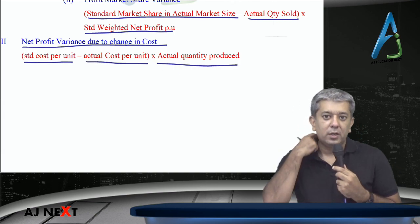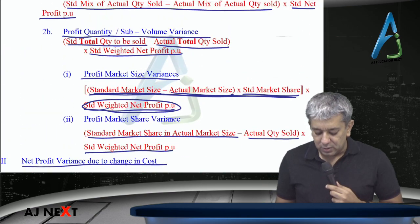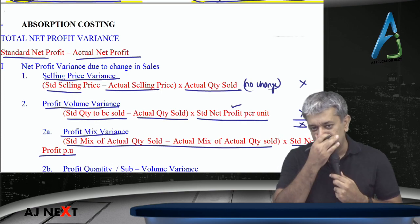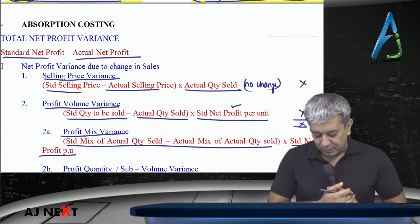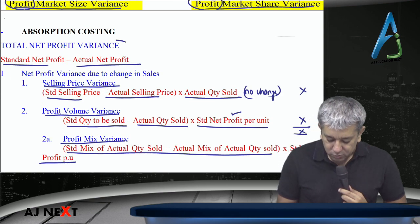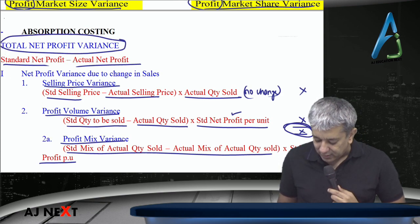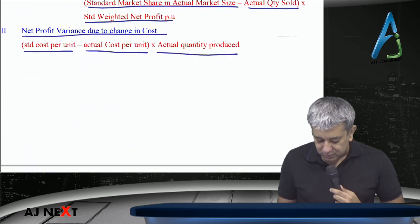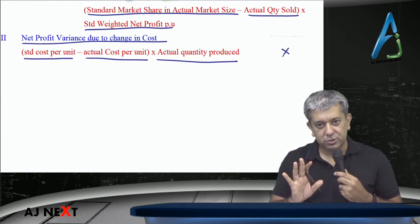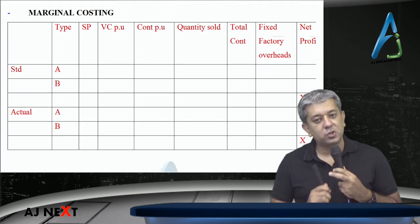Standard weighted average net profit per unit. That's it. Cost per unit that came, multiplied by actual quantity produced. That completes this part of the work. Remember one small check — your total net profit variance will tally with net profit variance due to change in sales, plus net profit variance due to change in cost. That completes absorption costing. Now let's do marginal costing.